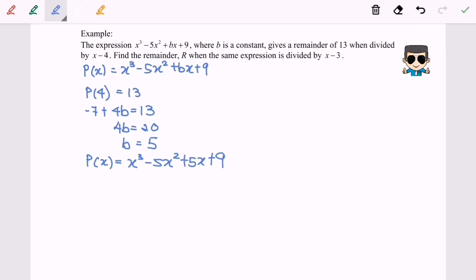So second part of the question, the question asks us to find the remainder, denoted as r, when the same expression which is P(x) is divided by x minus 3. So here I'm going to substitute the value x equals to 3 into the expression.